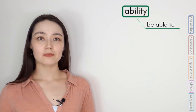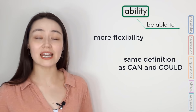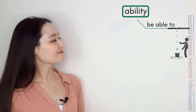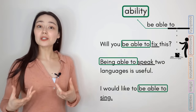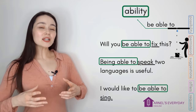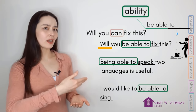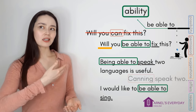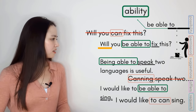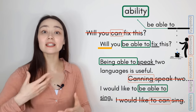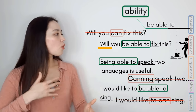What about 'be able to'? Be able to gives us more flexibility and means the same thing as can and could. For example: 'Will you be able to fix this?' 'Being able to speak two languages is useful.' 'I would like to be able to sing.' You can see be able to gives more options grammatically — 'Will you can fix this?' doesn't work. 'Canning speak two languages?' doesn't work. So we use 'be able to' when 'can' isn't grammatically possible.